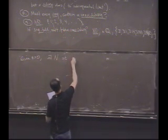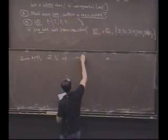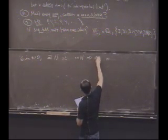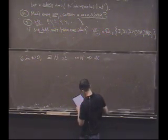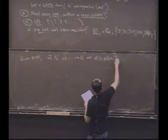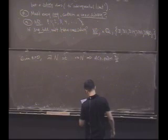Such that little n bigger than big N implies distance from P to Pn is less than, how about epsilon over 2?